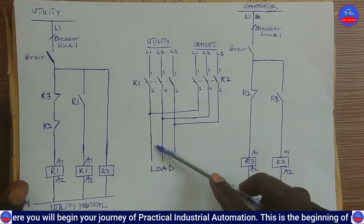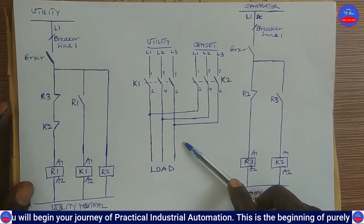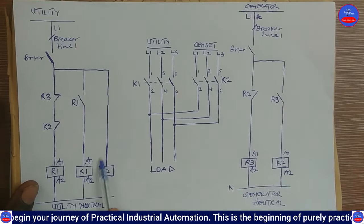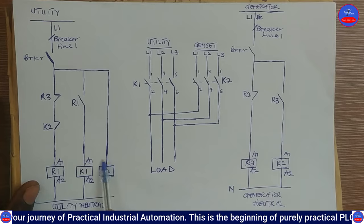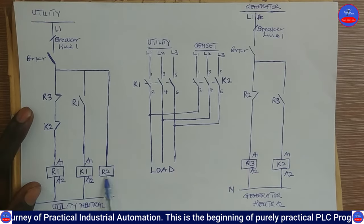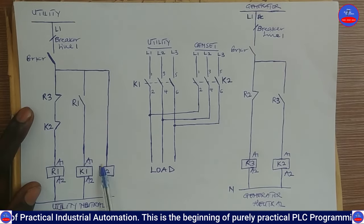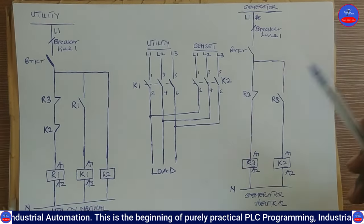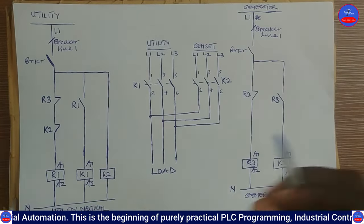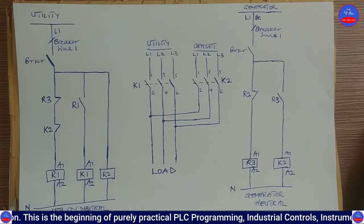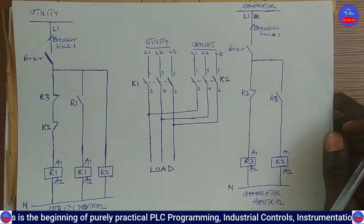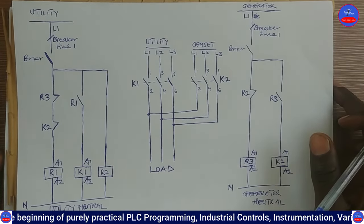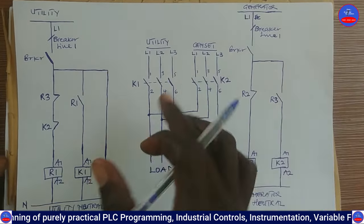That is how it works. R2 is there to serve as a sensor for the utility power. Basically, this is how an automatic changeover switch operates. Now we are going to do the wiring and see how to operate it.